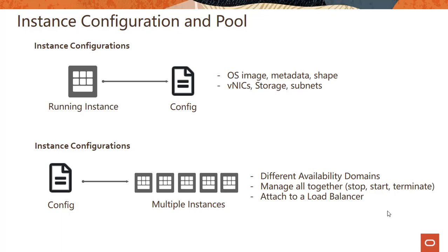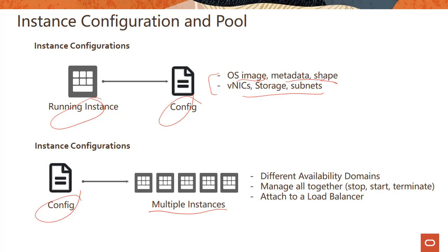What is instance configuration? As the graphic shows, you have a running instance and you can create a config from it. The config captures the OS image, metadata, shape, networking configuration, storage, etc. With this config, you create a template and you can spin up multiple instances using that template, place them in different availability domains, manage them together — stop, start, terminate — and attach them to a load balancer.